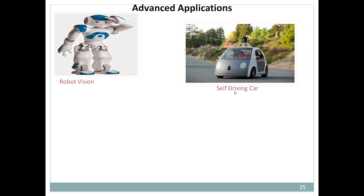Self-driving cars are another advanced application. As a car drives on the road, there are boards on the sides with speed limits and instructions written on them. A self-driving car is essentially a robot, and computer vision gives machines the ability to visualize just like a human being does with eyes. The self-driving car must detect various symbols and text written below them, recognize them, and take decisions accordingly.